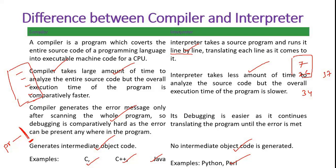So we discussed types of software, operating systems, and what language processors are available. We are narrowing down — in this course, we are going to use only the interpreter. Now we are ready to write a program.